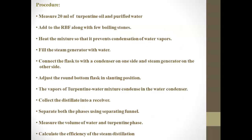Procedure: Measure 20 ml of turpentine oil and purified water, and add them to the round-bottom flask along with a few boiling stones. Heat the mixture to prevent condensation of water vapors. Fill the steam generator with water, then connect the flask to the condenser on one side and the steam generator on the other side. Adjust the round-bottom flask in a slanting position.